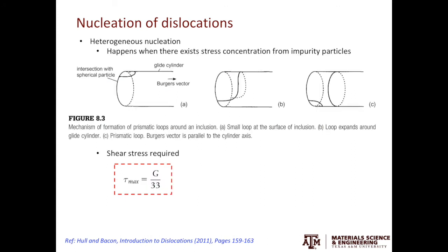Then how about heterogeneous nucleation? Heterogeneous nucleation happens when there exists stress concentration from the impurity particles. Here shows the intersection of the material and the particle. Let's for one minute discard the concept of specific glide planes in crystal structures and just accept we have the glide cylinder here.